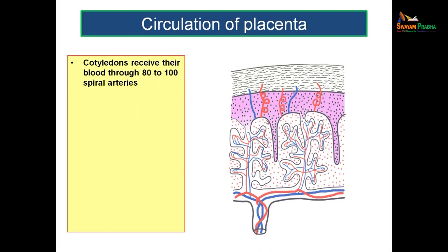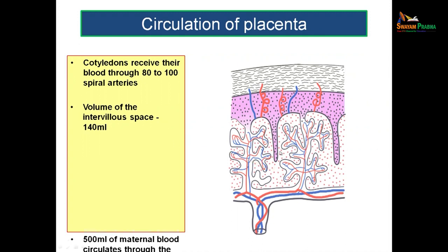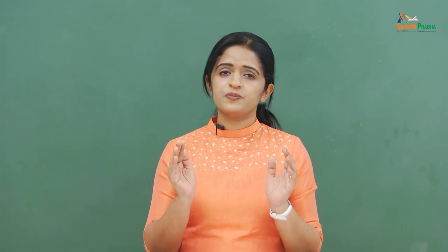The maternal cotyledons receive blood through 80 to 100 spiral arteries. The volume of the intervillus space is roughly 140 ml, and 500 ml of blood circulates through it per minute — meaning maternal blood circulates through the placenta approximately 4 times per minute.